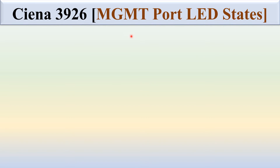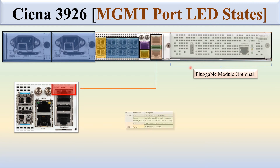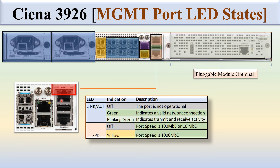Sienna 3926 management port LED status. You can see the management port. There are two LEDs: link/act and SPD. There are three conditions for link/act and two conditions for SPD. If link/act is off, the port is not operational. If green, it indicates a valid network connection. If blinking green, it indicates transmit and receive activity. If SPD is off, the port speed is 100MB or 10MB. If SPD is yellow, the port speed is 1000MB or 1GB.